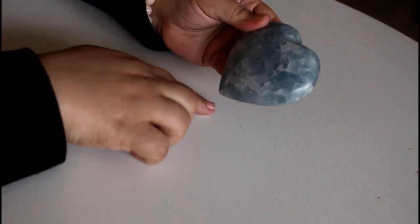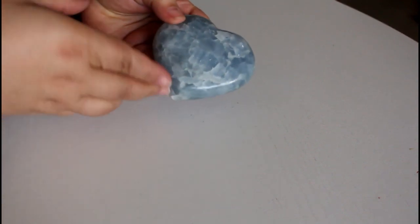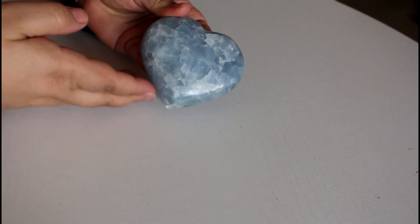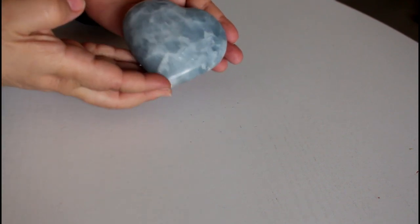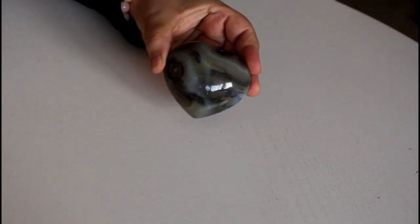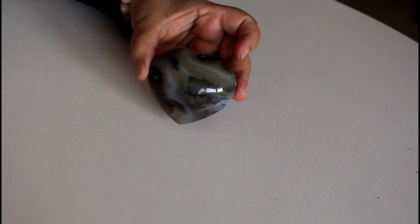There is also the shape of a heart, like this beautiful angelite stone shaped like a heart. Another heart is this agate crystal. They just look divine, don't they?